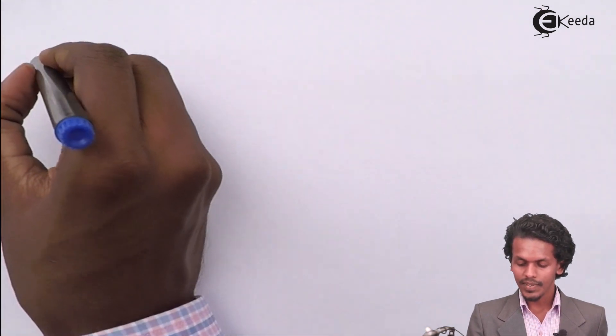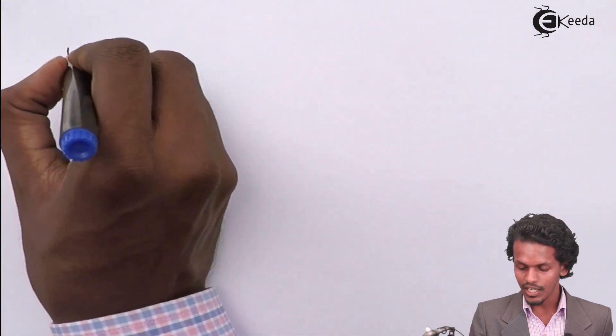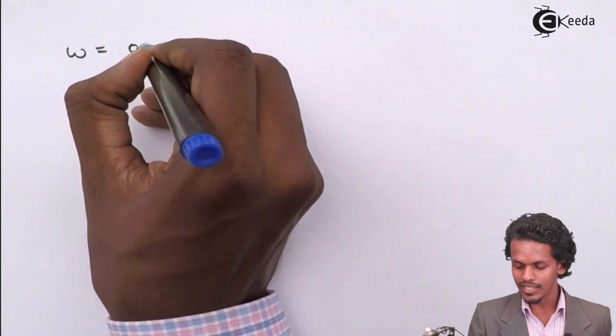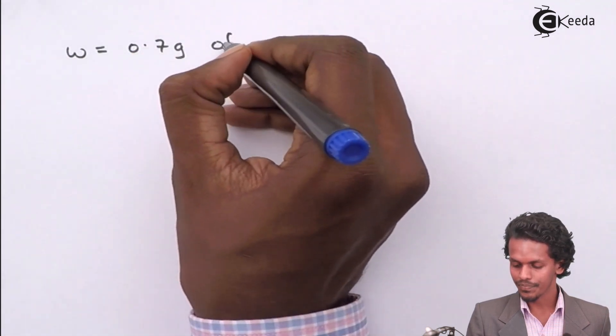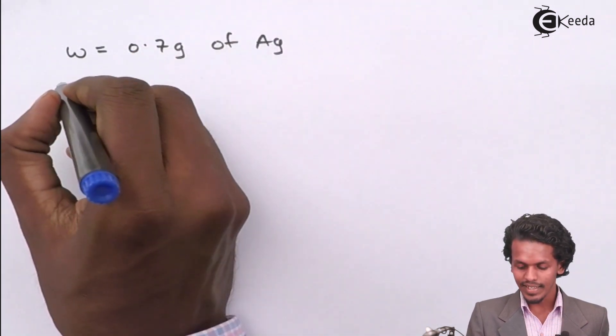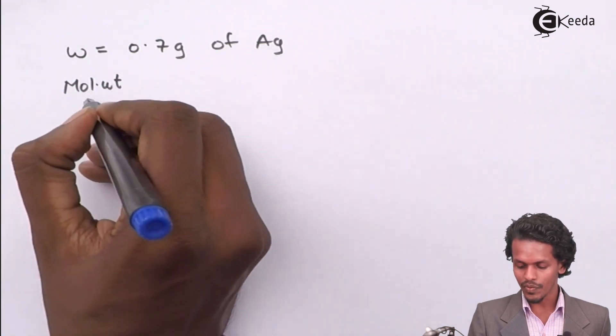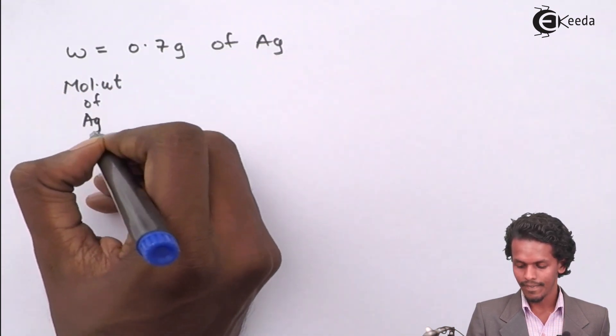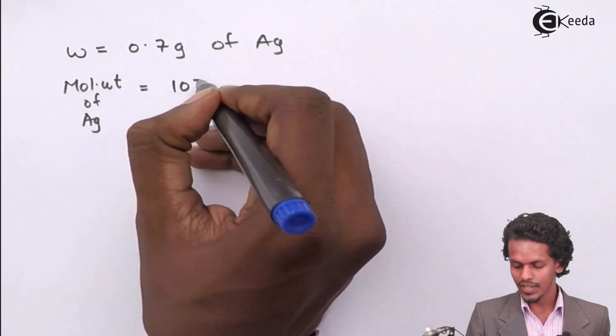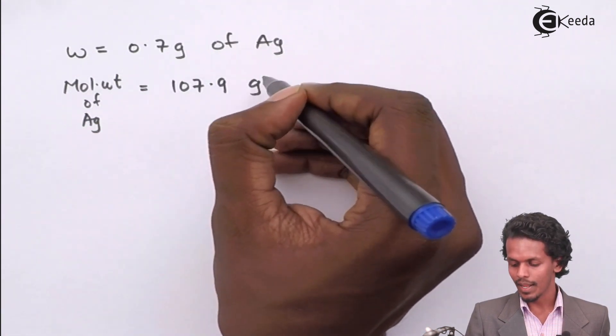What they have provided us is W, the weight, given as 0.7 gram of Ag. The next is molecular weight, also provided to us, which is 107.9 gram per mole.